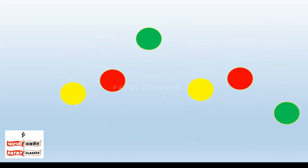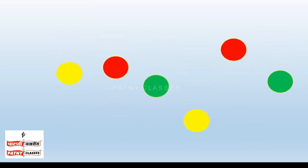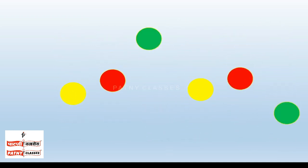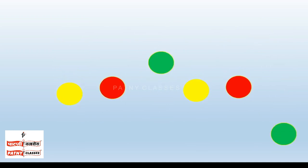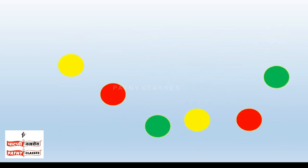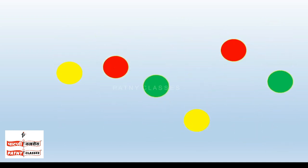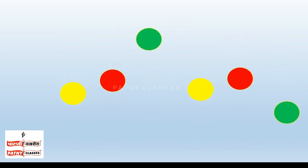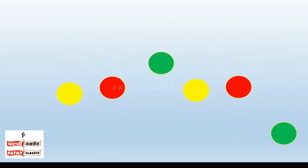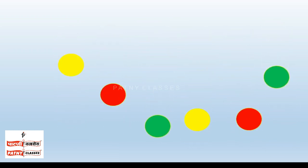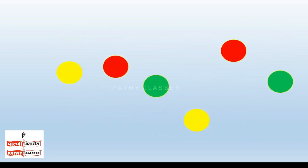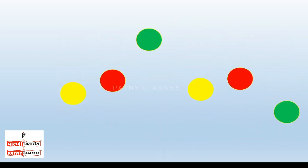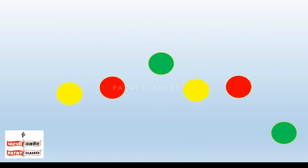Now, guess which of the following particles are vibrating with the same state of vibration. The answer is none of them, because all are vibrating with different timings, different heights, and different lengths. Therefore, none of the particles are in the same state of vibration.